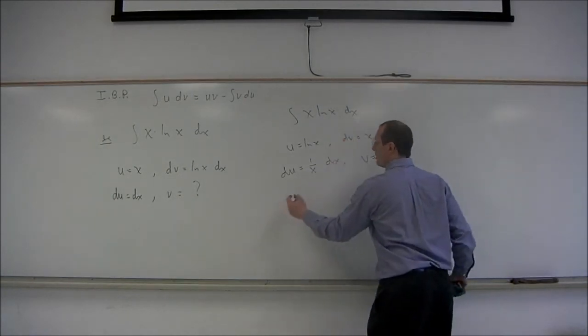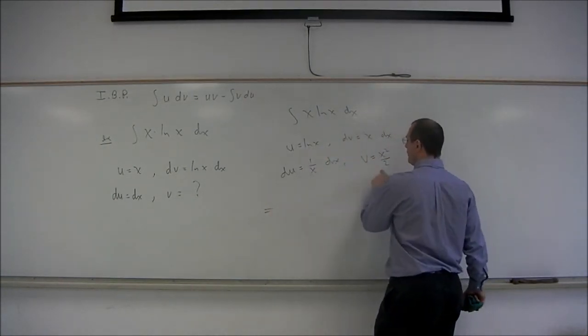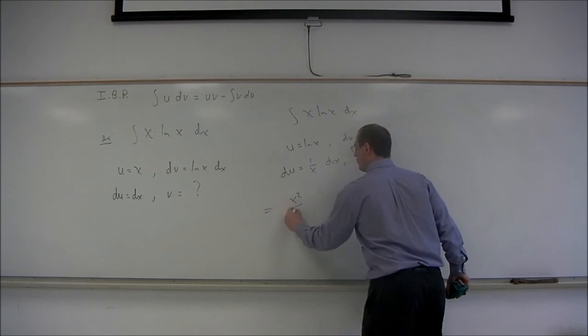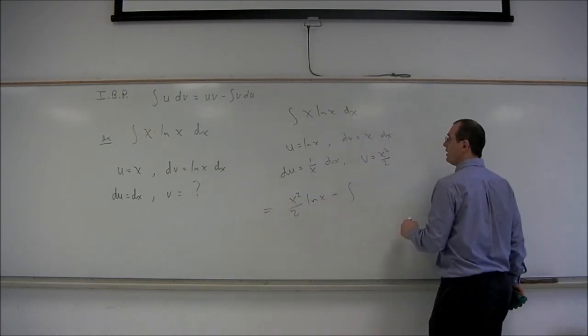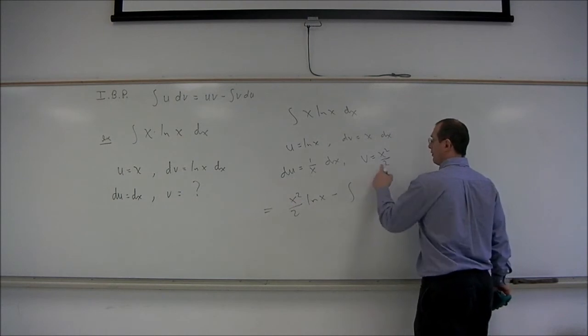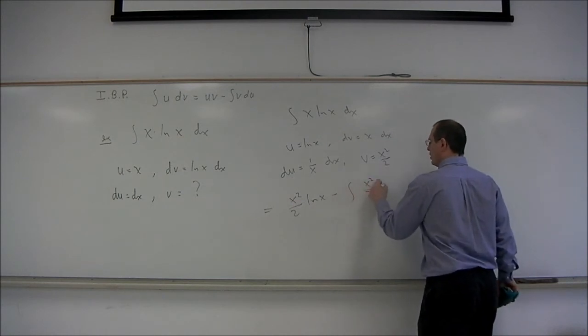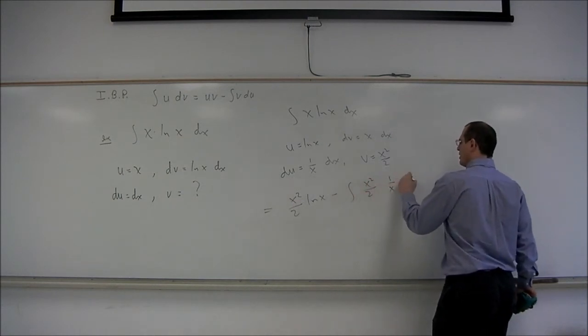So using the formula, that integral is equal to uv, which is x squared over 2 log x, minus the integral of v du, v is x squared over 2, times du is 1 over x dx.